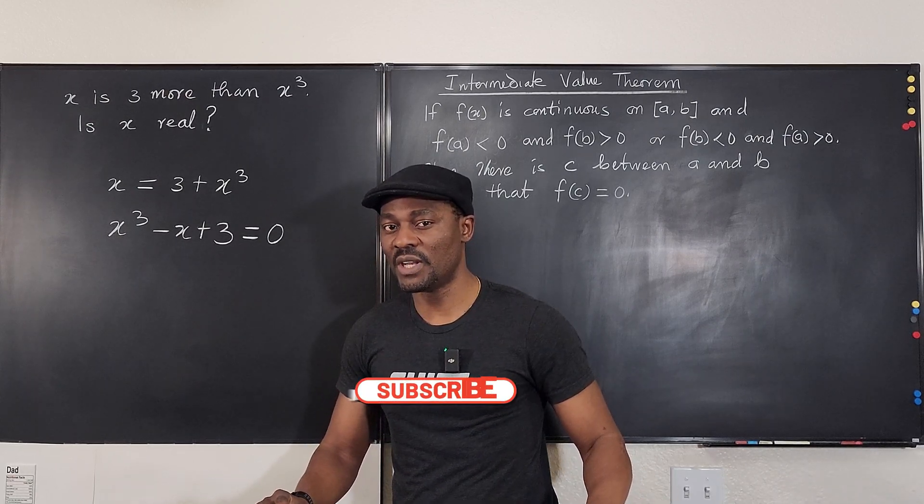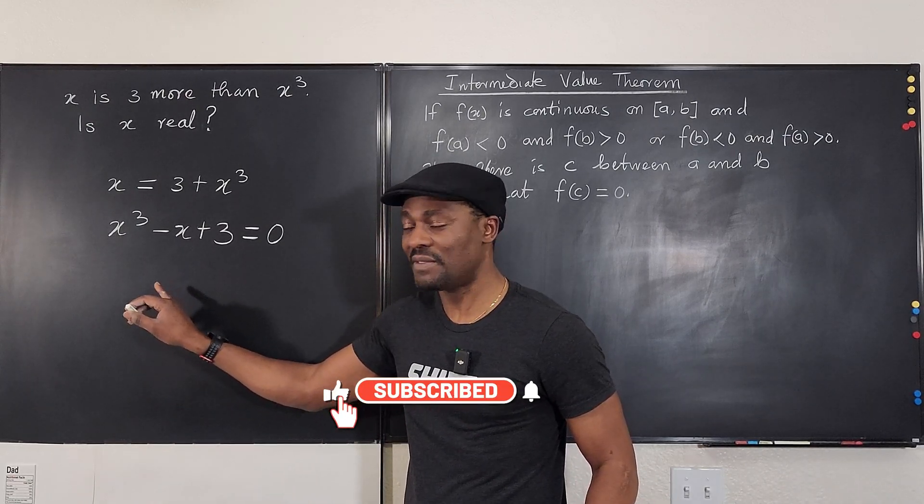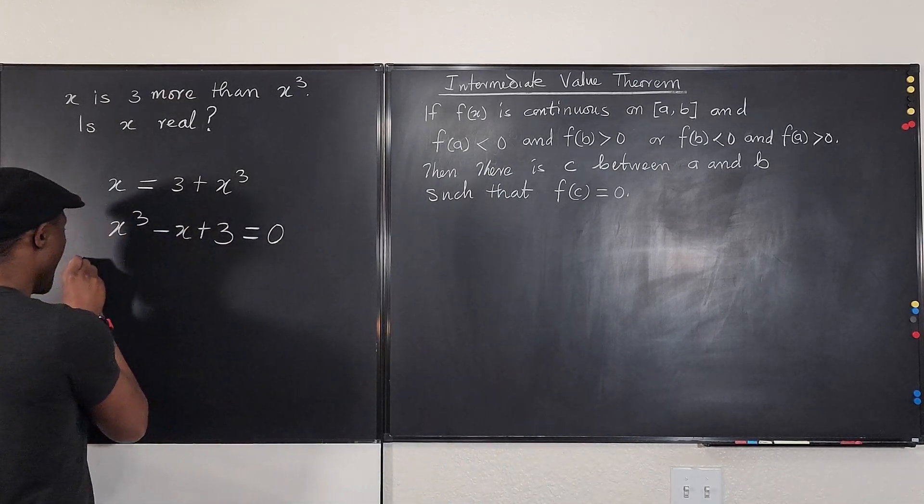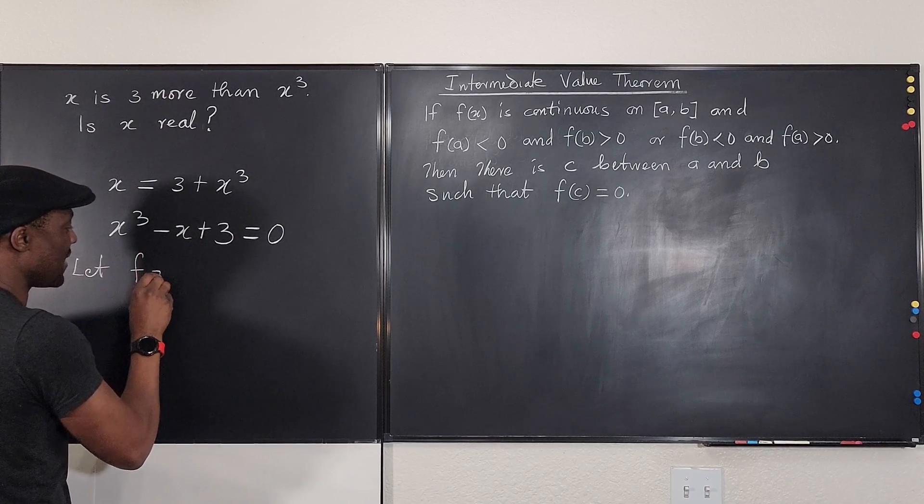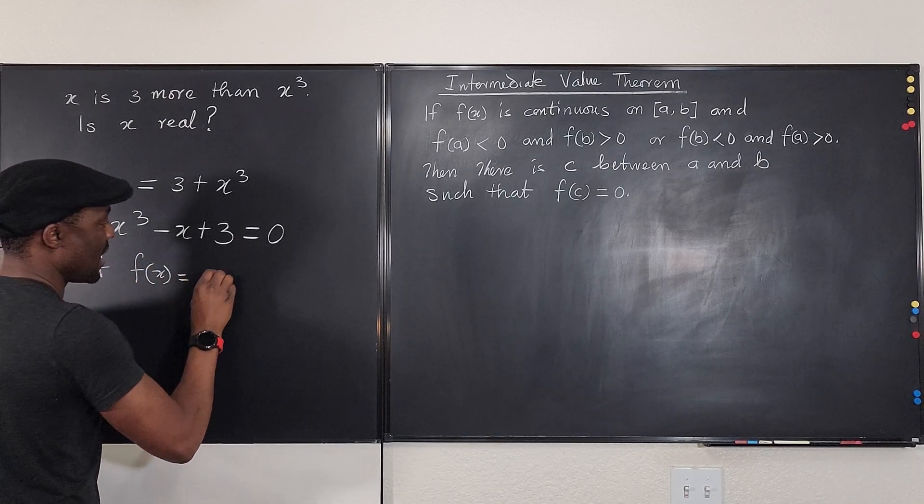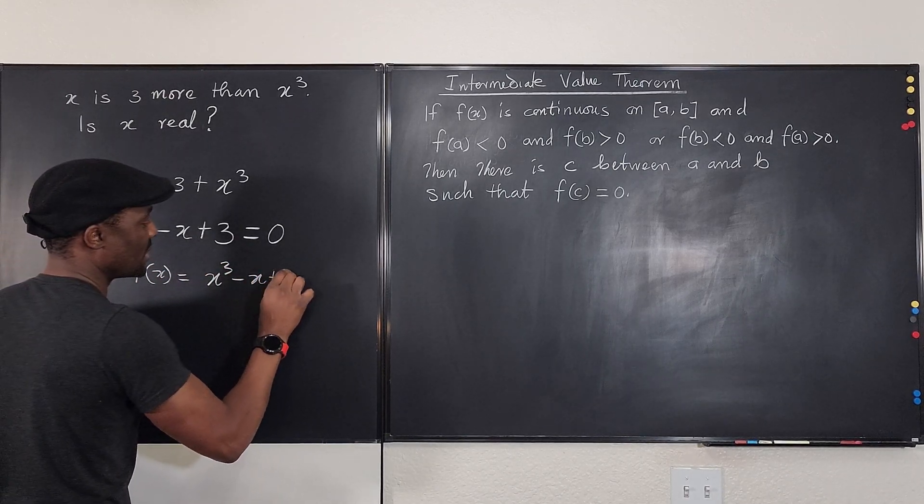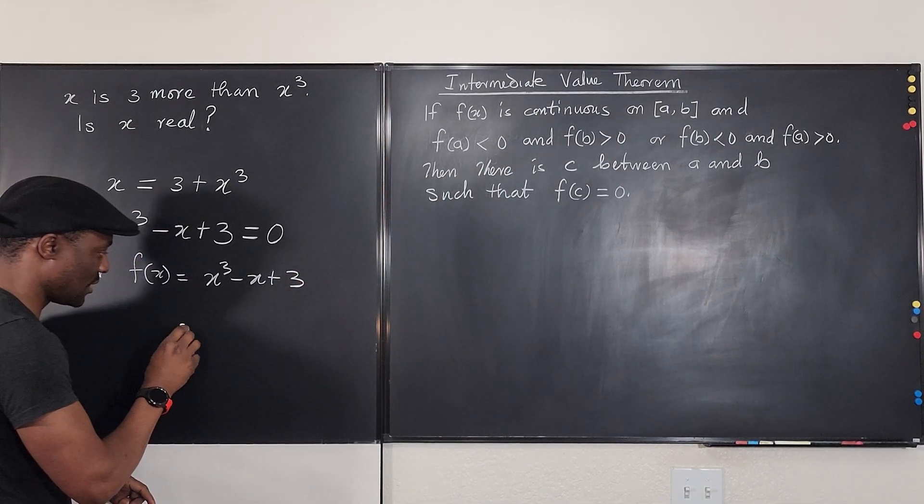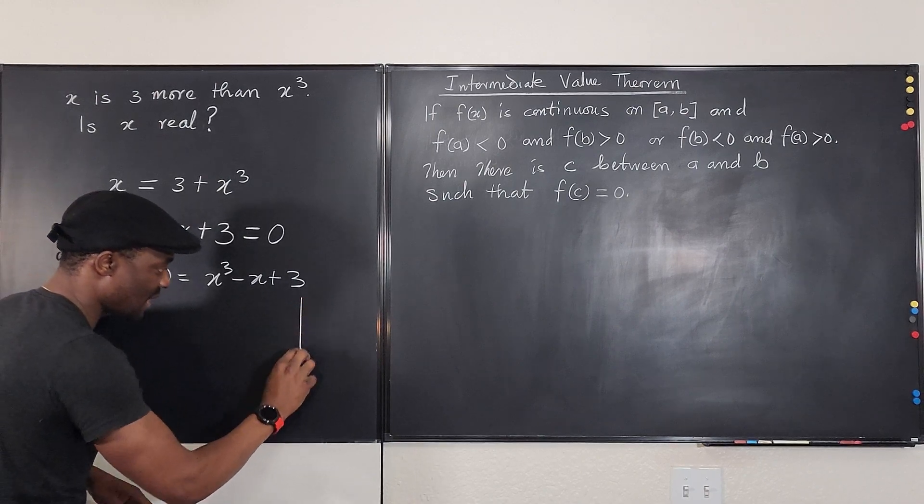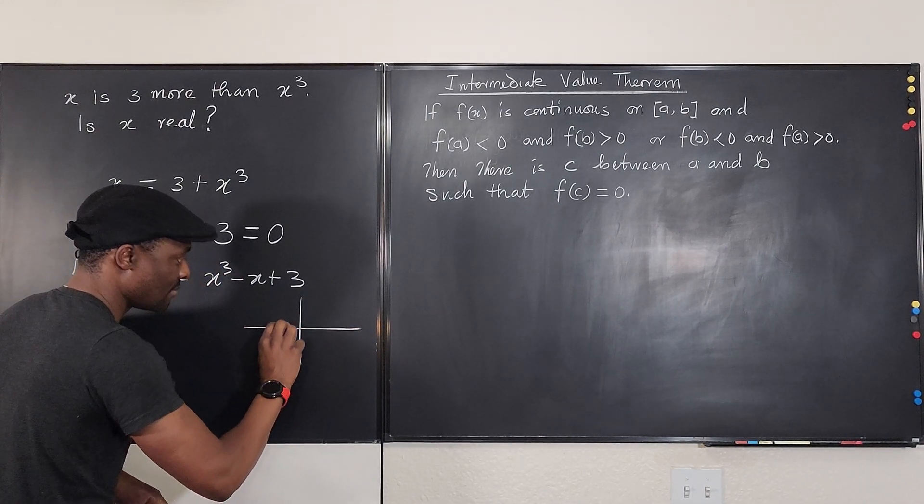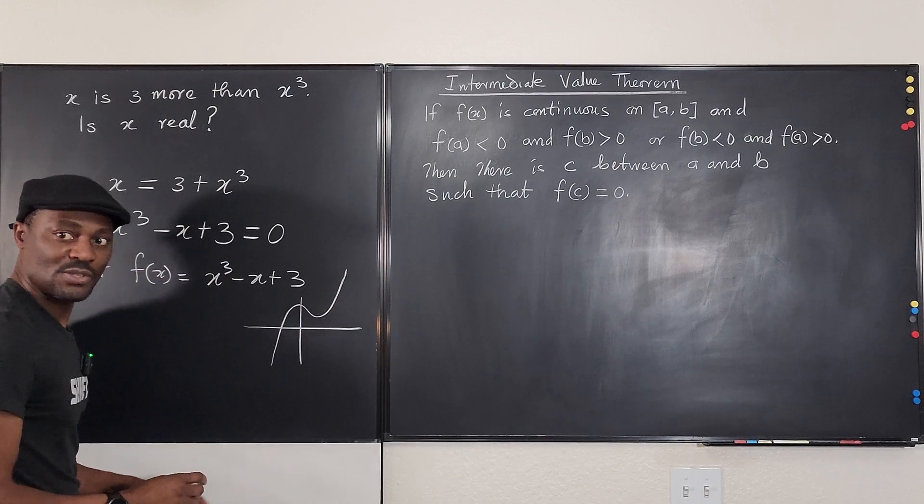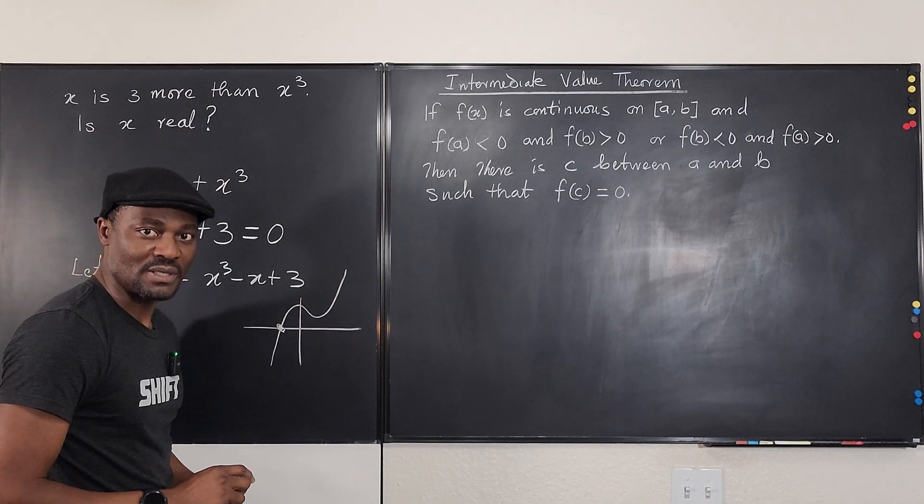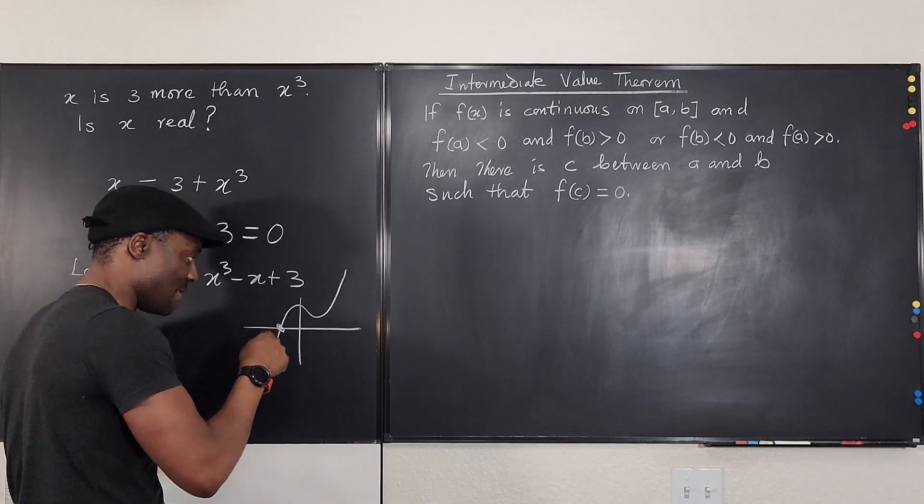We're not trying to solve this. We just want to show that there's going to be a value of x for which this expression will be equal to zero, and it's going to be a real number. Now, before we go into the calculation, you could actually graph this. Just looking at this, this is a cubic function. So if we say let f(x) be equal to x cubed minus x plus 3, you could tell that when you plot the graph of this function, what would you get? You're going to get something that looks like this. This is one option. It must cross the x-axis at some point. It must. So there is an answer.